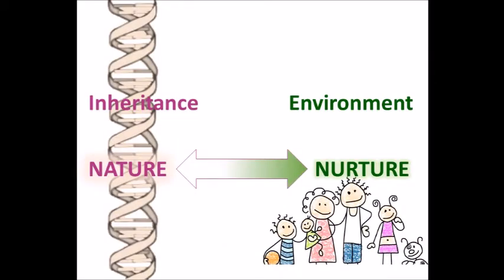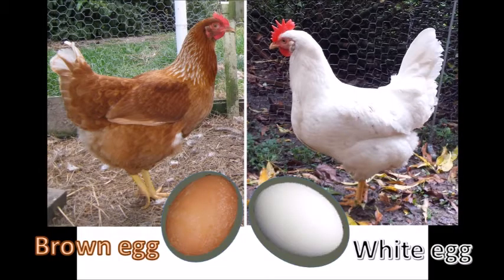We see this combination of inheritance and environment in chickens too. A chicken inherits the genetic code for a certain amount of brown coating for its eggs. This doesn't mean that every egg the hen lays will always be exactly the same colour. But a hen that lays white eggs will never start laying brown eggs because she doesn't have the genetic background to do so.